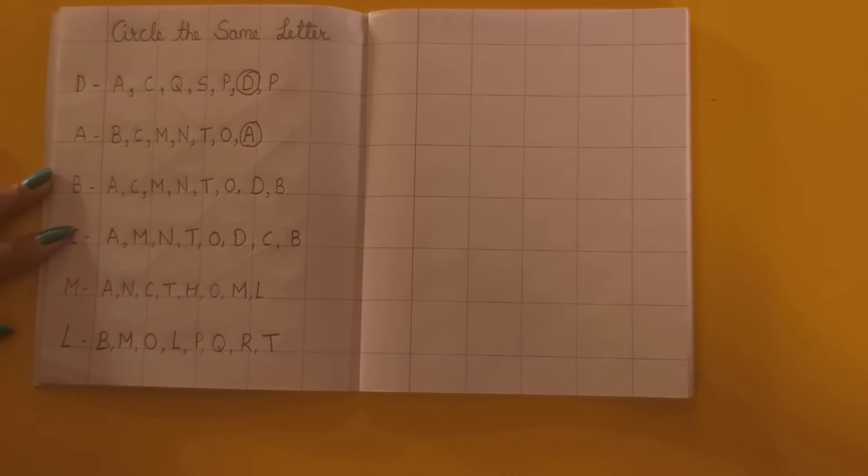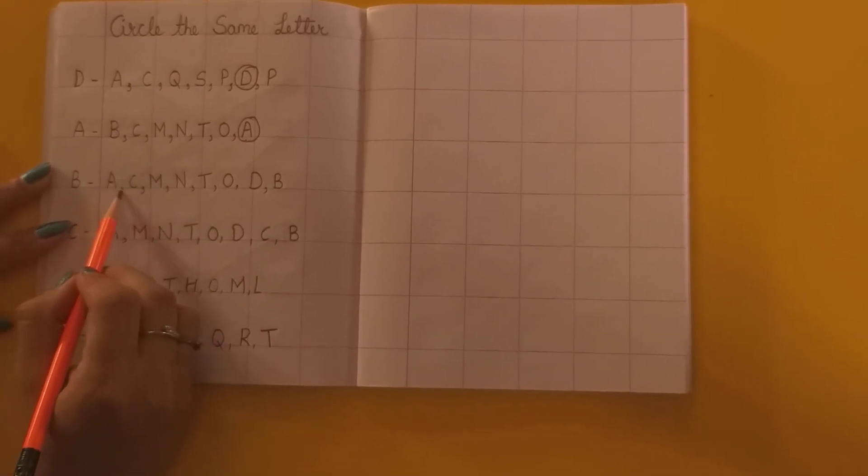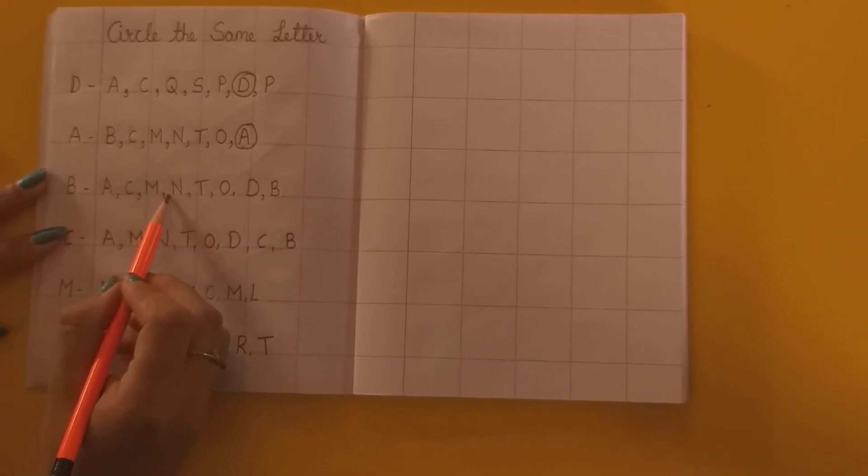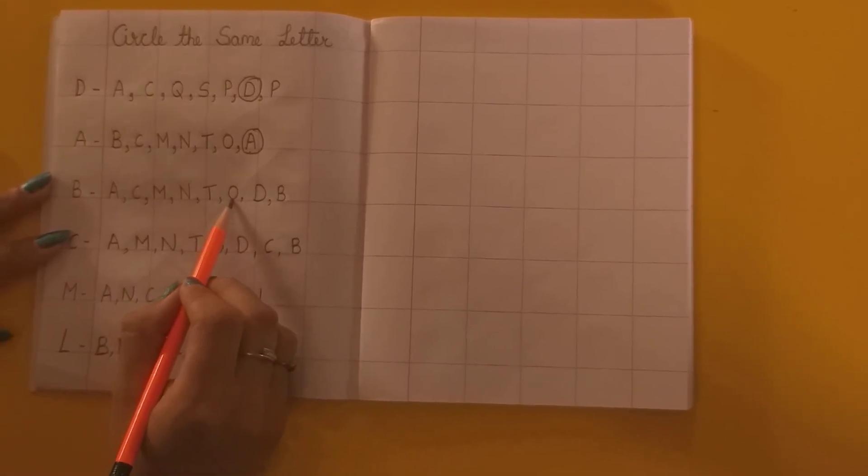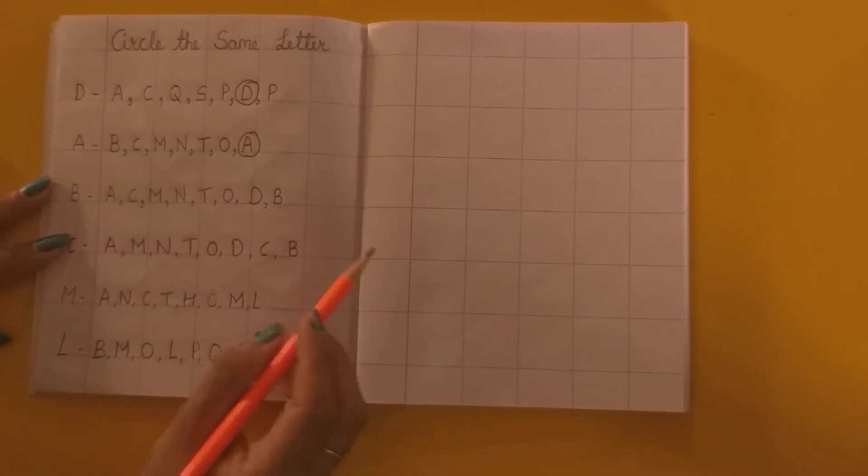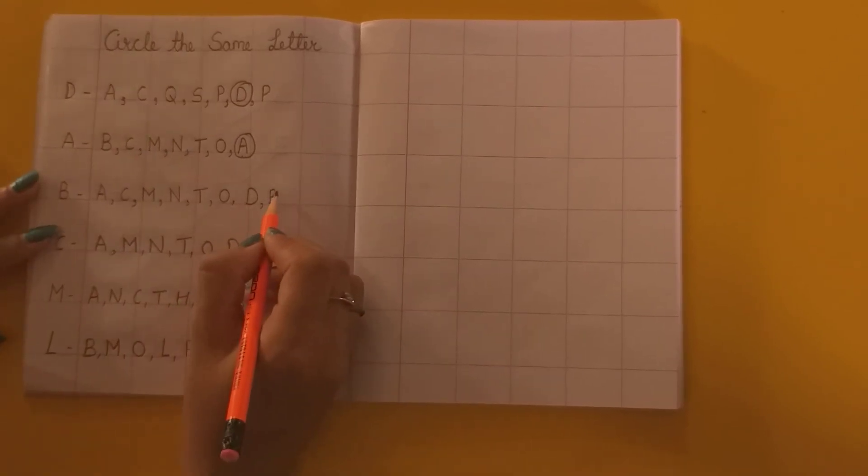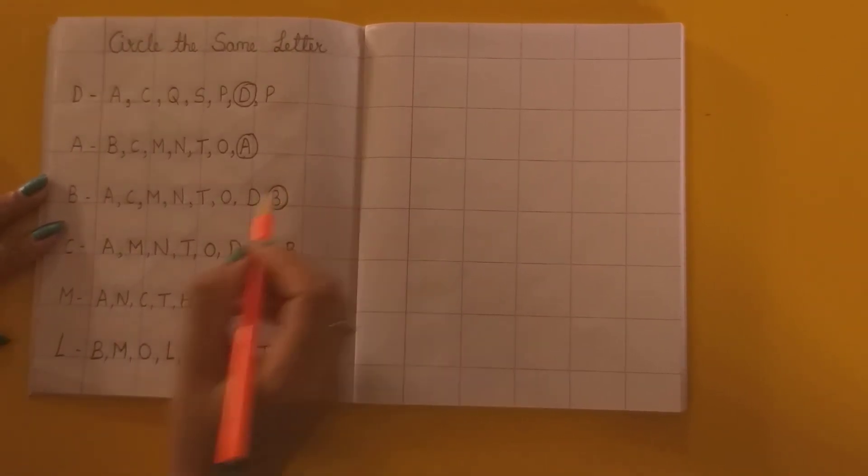The next letter is B. Yeh hai? Nayin. Yeh bhi nahi hai. Yeh toh T hai. This is O. This is D. Yeh raa B. Pakal liyaa usko ma'am nae.